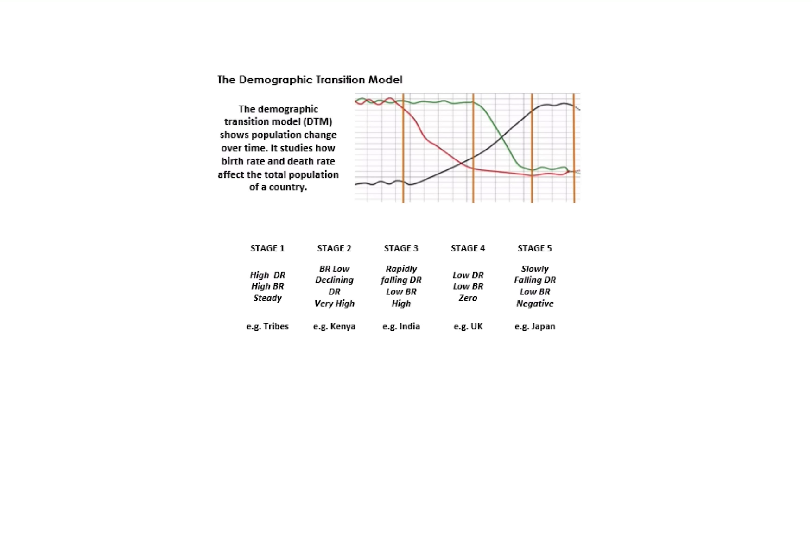The demographic transition model plots a country's development across five stages, with three line graphs showing change over time. Stage 1: high death rate, high birth rate, steady population — examples include Amazonian tribes. Stage 2: birth rate starts to drop, death rate remains high — example: Kenya. Stage 3: rapidly falling death rate, low birth rate, high population — example: India (NEEs). Stage 4: low death rate, low birth rate, steady population — example: the UK. Stage 5: falling death rate, low birth rate, and negative population growth — example: Japan.